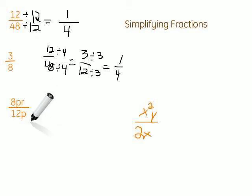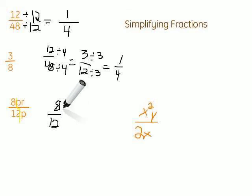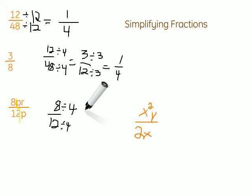We'll also see fractions that include variables. When you're given a fraction that involves a variable, break it into two pieces: look at the part with the numbers, and then the letter part. Let's start with the numbers — we have 8 over 12. What can we divide both 8 and 12 by? 4. So divide on the top by 4 and on the bottom by 4. 8 divided by 4 gives me 2, over 12 divided by 4 gives me 3.